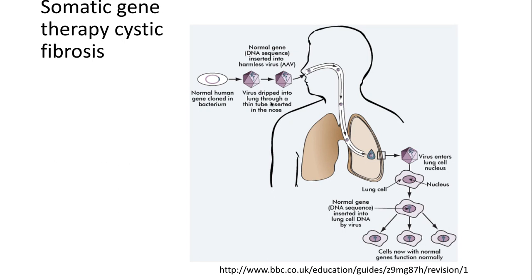This individual will breathe in the virus, and the virus works by inserting its genetic information into our genetic information. The healthy gene will be inserted into the cells that line the lungs, so these lung cells are now healthy cells and they produce the normal levels of mucus. This person now has a temporary cure for cystic fibrosis.